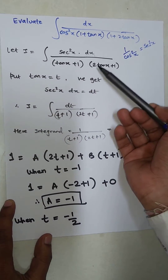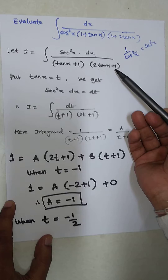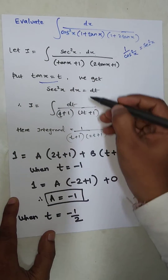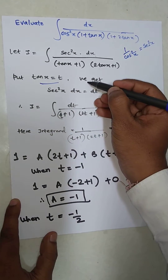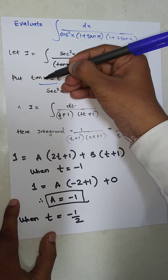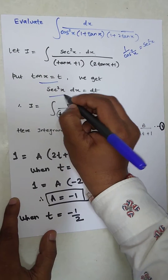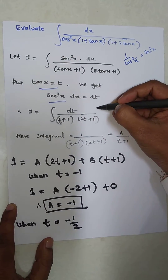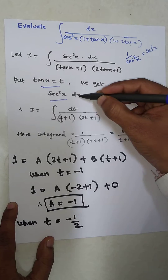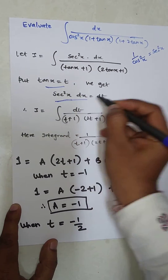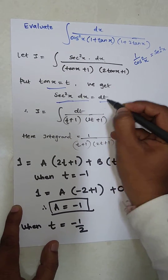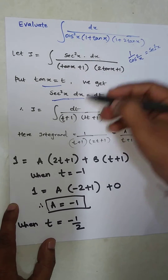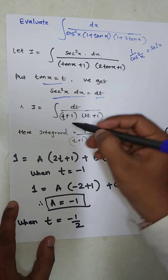Now put tan x equal to t. If we differentiate, we get the derivative of tan x as sec²x, so sec²x dx = dt. We now replace this in the equation to get dt upon (t + 1) as the first bracket and (2t + 1) as the second bracket.